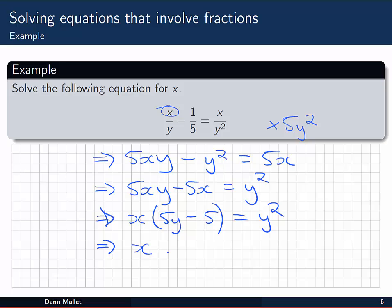And then dividing both sides by the factor in parentheses, giving us x equal to y squared over 5y minus 5. And we have our solution for x. Again, you can substitute back to check.